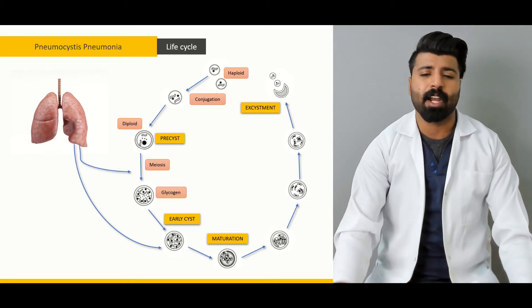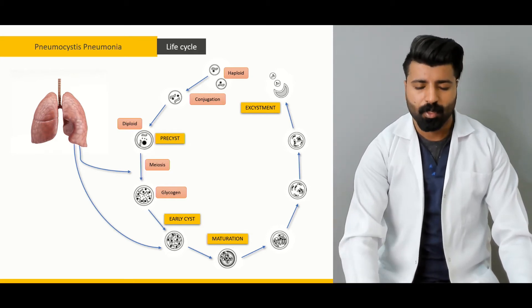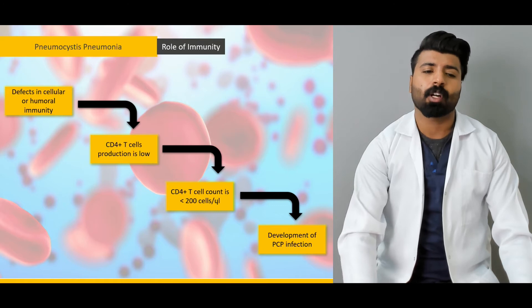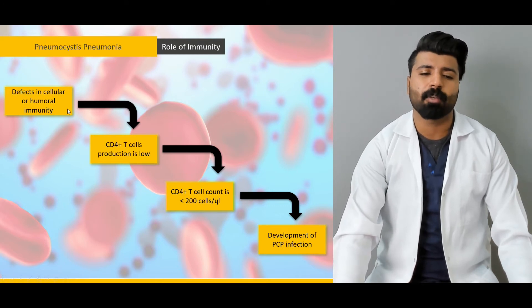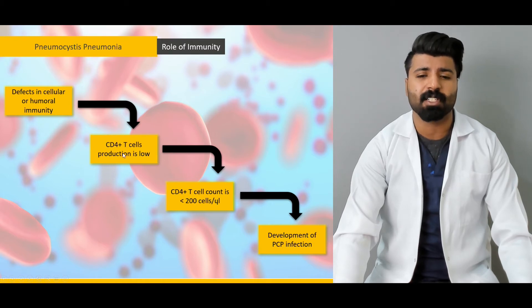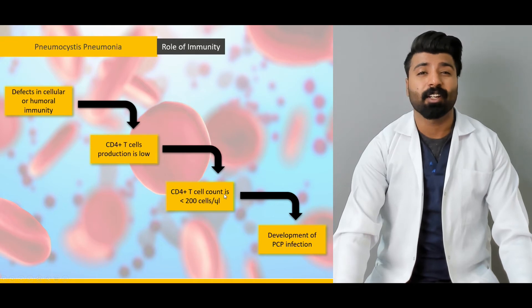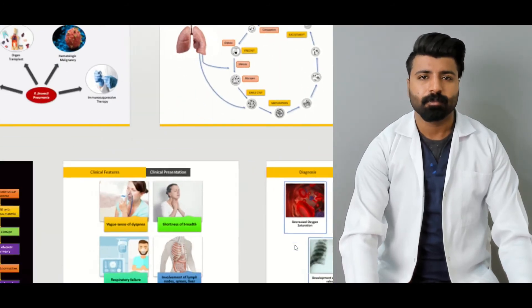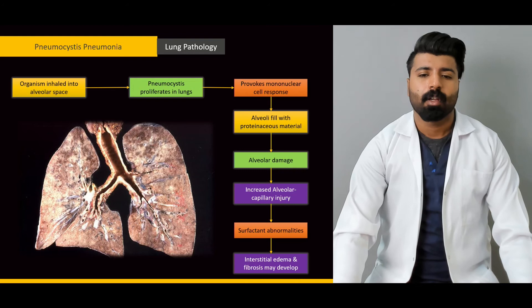Next, we'll talk about the role of immunity — how a defect in cellular or humoral immunity leads to decreased CD4+ T cells, with the CD4+ T cell count falling to less than 200 cells per microliter, and how this leads to the development of PCP (Pneumocystis pneumonia).